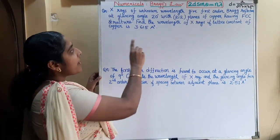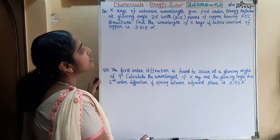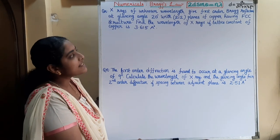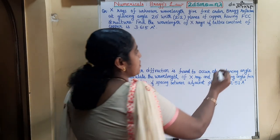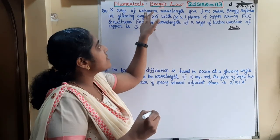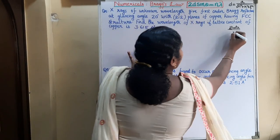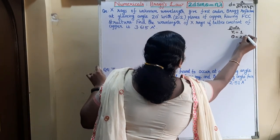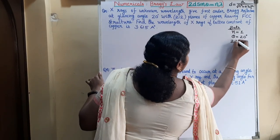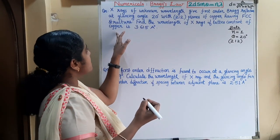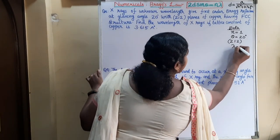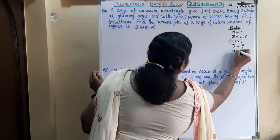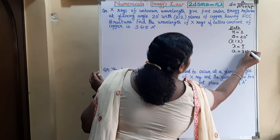First question: X-rays of unknown wavelength give first order Bragg reflection at a glancing angle of 20 degrees with 212 planes of copper having FCC structure. Find the wavelength of X-rays if the lattice constant of copper is 3.615 Angstroms. Given: N equals 1, theta equals 20 degrees, HKL values are 2,1,2, and lattice constant A equals 3.615 Angstroms.